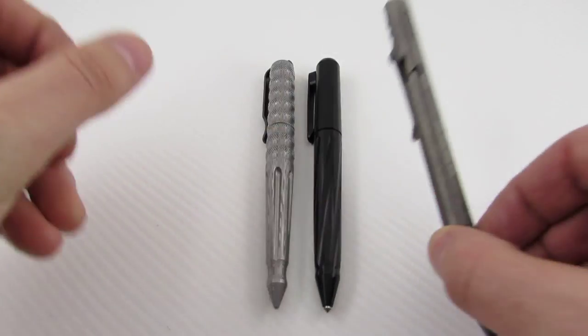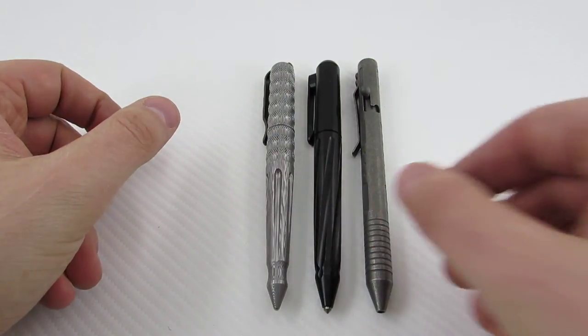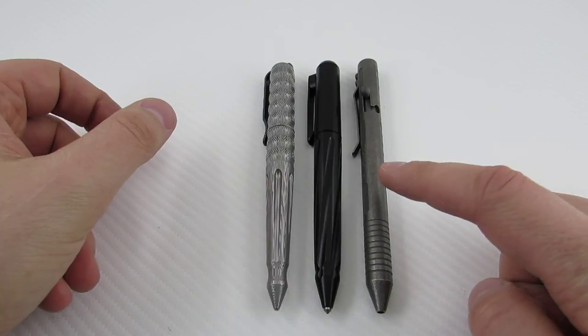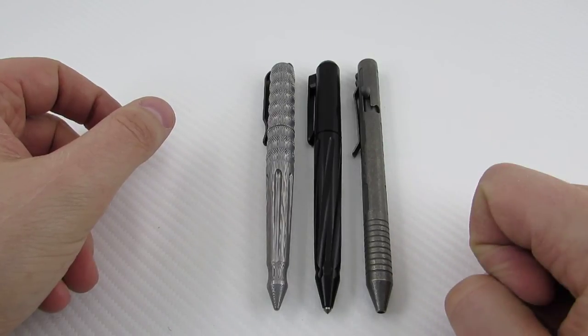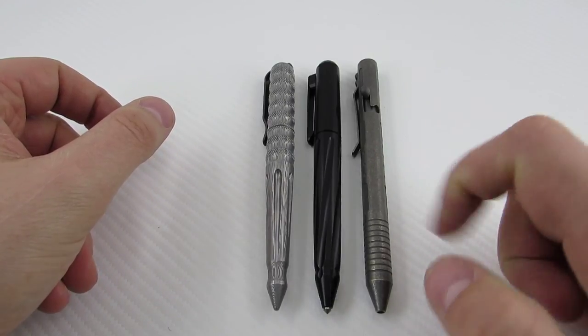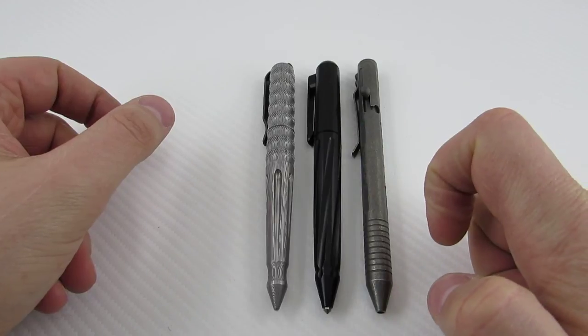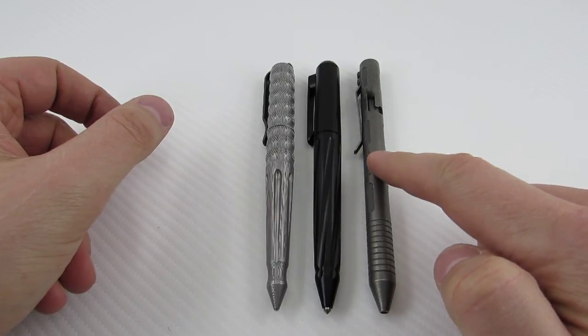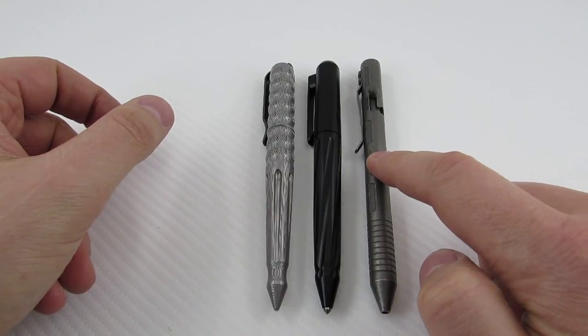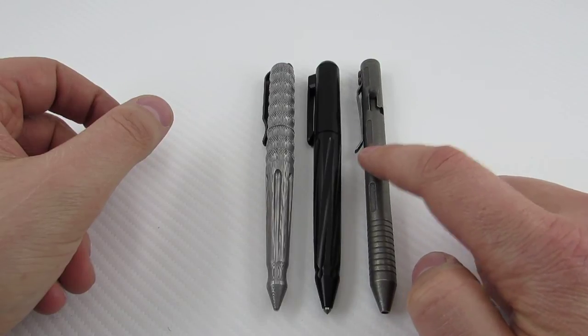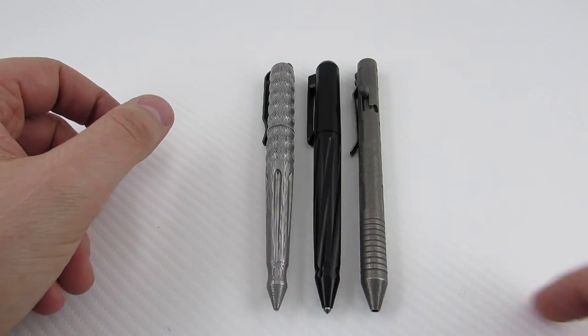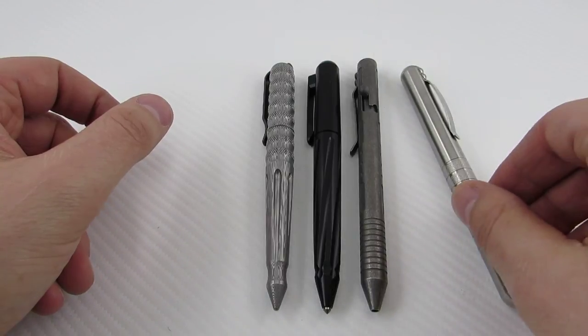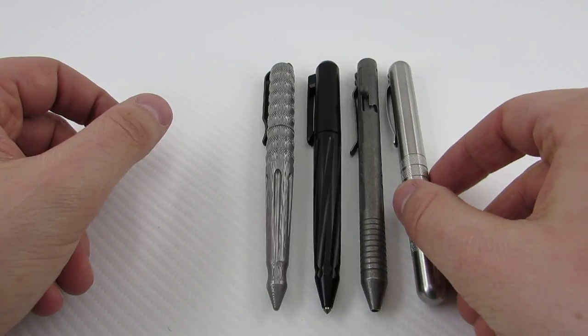I do have a Fellhoelter TiBolt, again size is quite similar. This is a better, this is a one-handed operation which I like, but I do like the pocket clip here better. This one does have a tendency to catch onto things sometimes, like my shirt and kind of grab the threading sometimes.